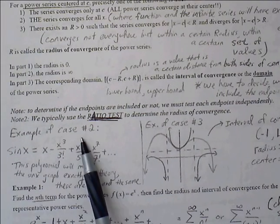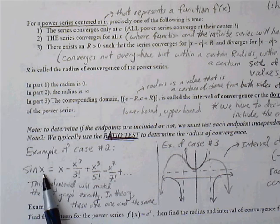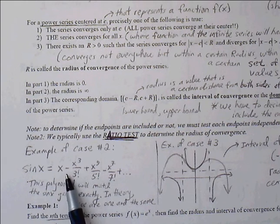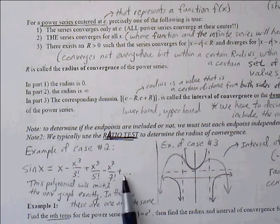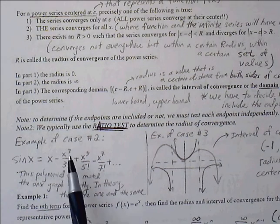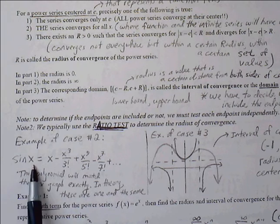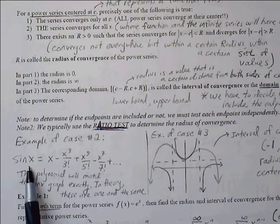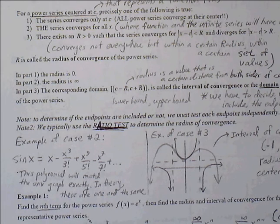An example of case two — where the series converges for all x — is sin(x). The sine function can be represented by the power series: x minus x cubed over 3 factorial, plus x to the 5th over 5 factorial, minus x to the 7th over 7 factorial, and so on. As long as we keep adding infinitely many terms following this pattern, this polynomial will match exactly with the sine curve. If you were to graph this in a calculator alongside sin(x), they match exactly — in theory, these are one and the same.